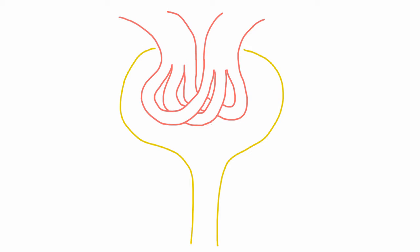In the very beginning we said the kidney helps the body get rid of wastes, and it does that by purifying the blood. Some of those wastes were urea, for example, which is a byproduct of breaking down proteins. And there's also uric acid, which is a byproduct of breaking down DNA or RNA.